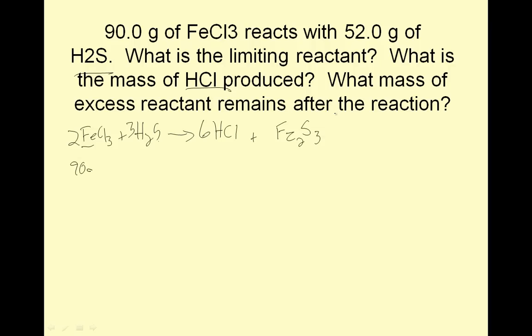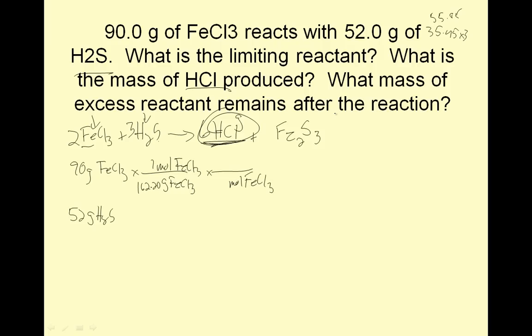So, 90 grams of FeCl3 and 52 grams of H2S. Notice I have 2 reactants. I'm going to convert them both into the same thing, which is going to be mass of HCl. Grams of FeCl3, 1 mole FeCl3. Little g stands for grams, little g stands for go to the periodic table. 55.85 is iron, 35.45 times 3 is chlorine. 35.45 times 3 plus 55.85 is 162.20. I'm looking for grams of HCl.